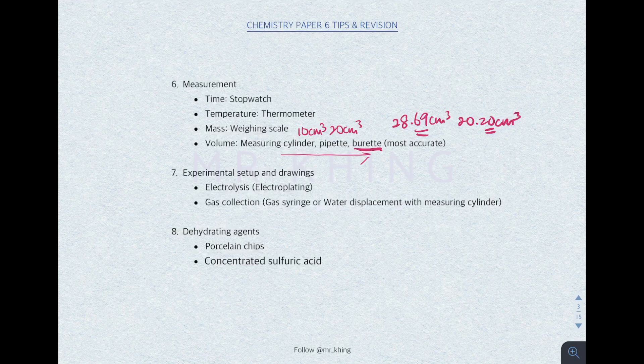Examples of dehydrating agents: the function of a dehydrating agent is to remove water — like porcelain chips or concentrated sulfuric acid. Whenever you see the word 'concentrated' followed by an acid, and it doesn't involve in the reaction, then 100% it is acting as a dehydrating agent.